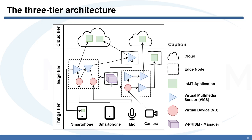For example, a smartphone is producing data, and a virtual device is receiving the data from the smartphone. The stream is then sent to one or more VMS, and each VMS will execute some type of transformation, process, or detection over this multimedia stream. The result of this processing is delivered to the application hosted in the cloud, in the edge, or even in the things tier. The components of the architecture are hosted in edge nodes too, making it a distributed architecture that runs over multiple heterogeneous nodes composing our edge tier infrastructure.